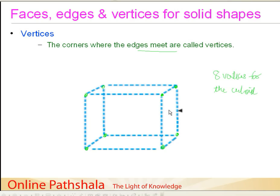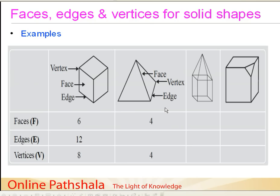Now let us try to find out the faces, edges and vertices for a few more shapes. The earlier example was that of a cuboid — this one is a cube. A cube or cuboid has six faces, twelve edges and eight vertices.